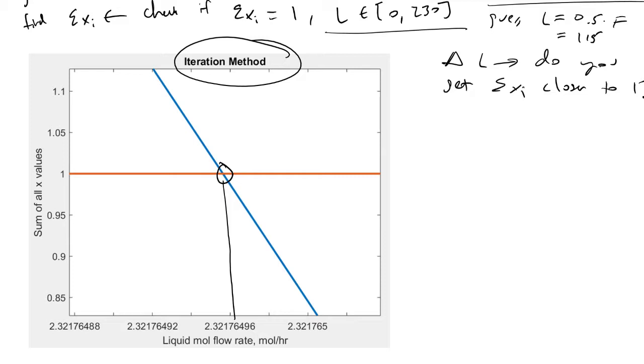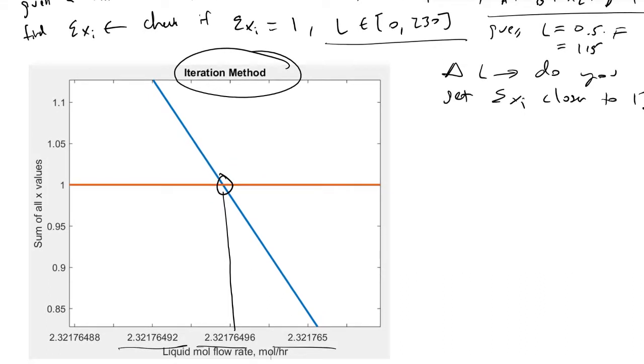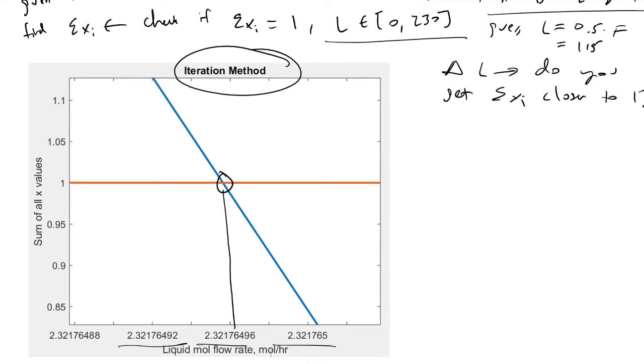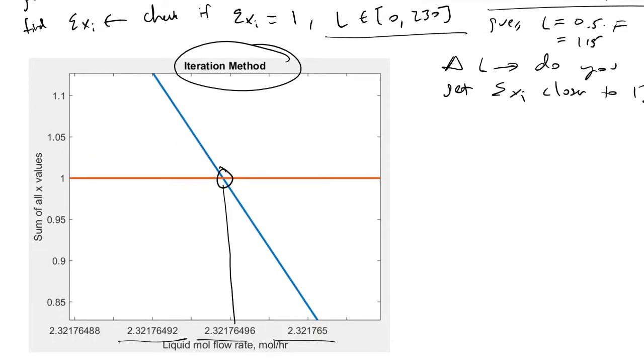By hand, you would keep guessing values until you get close to one. You're essentially doing what a computer does but much slower and more prone to errors. If you're taking an exam, you have to demonstrate your understanding and do this by hand, but you can easily check your work in MATLAB and verify that Aspen is telling you accurate data.